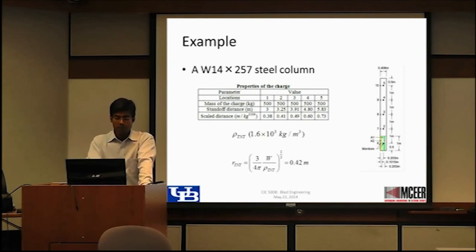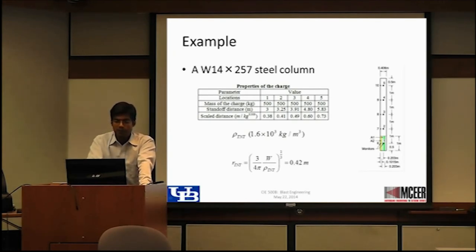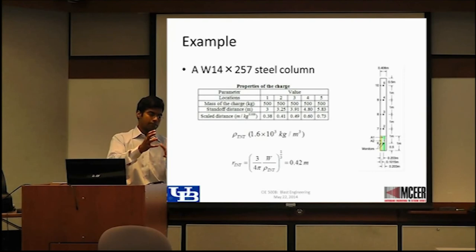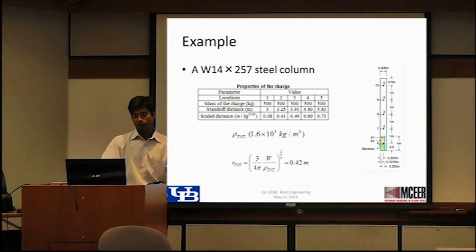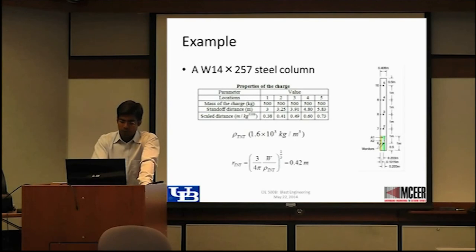This is an I-beam of height 5 meters, located 3 meters from the charge. The charge is a hemispherical surface burst. TNT density is taken as 1.6×10³ kg/m³. The charge is considered as a sphere, and you multiply the volume by density to get the weight. Using that expression you can calculate the radius of the charge — given the weight and density, it comes out to approximately 0.42 meters.